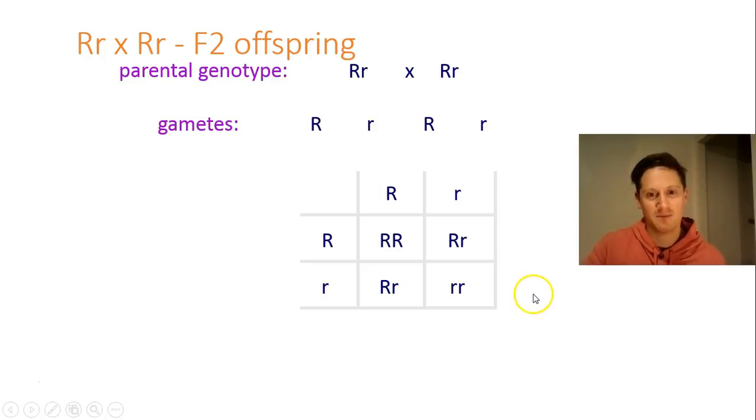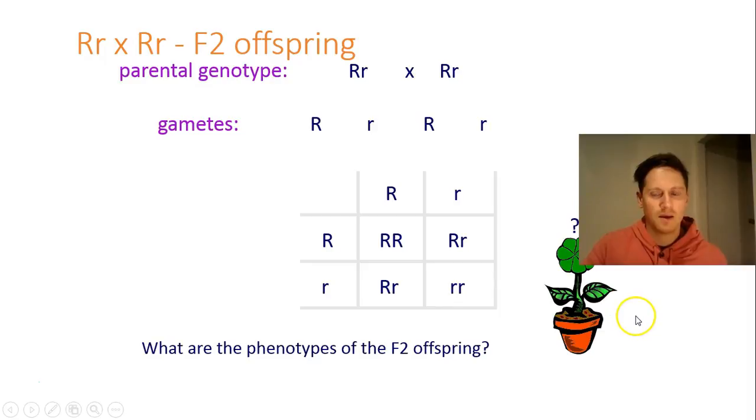So this is what you get from your cross. Big R, big R, big R, little r, big R, little r, little r, little r.